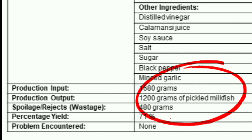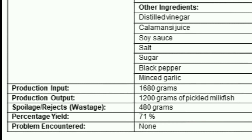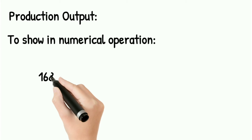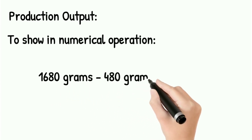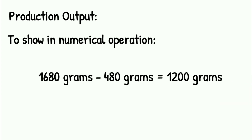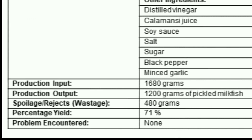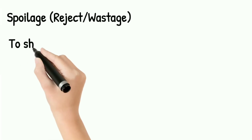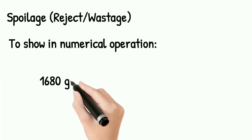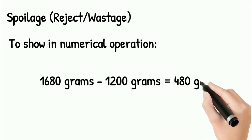Production output is 1,200 grams since 1,680 grams — the total sum of all quantities of items — minus 480 grams, the amount of wastage, equals 1,200 grams. In numerical form: 1,680 grams − 480 grams = 1,200 grams. Wastage is 480 grams since 1,680 grams minus 1,200 grams, the amount of output, equals 480 grams. In numerical form: 1,680 grams − 1,200 grams = 480 grams.